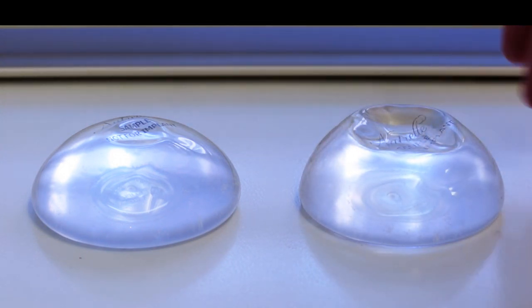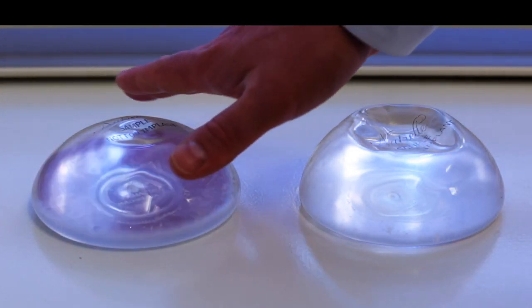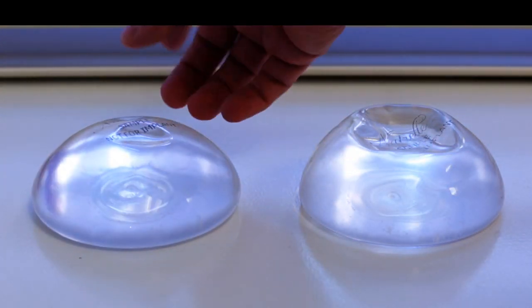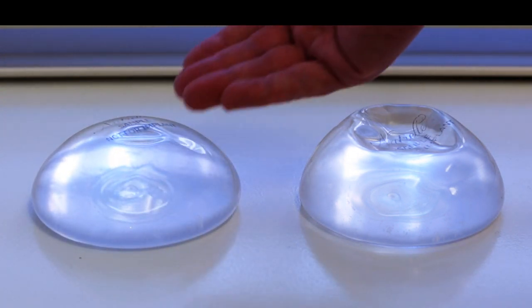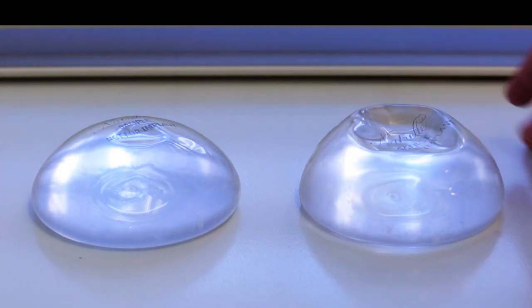So as you can see, even with both these implants sitting here on the table, the new Inspira has a much nicer shape with no, at least that we can see, rippling or wrinkling. The gel kind of fills itself out and fills the shell out, so it sits in a very natural spot.